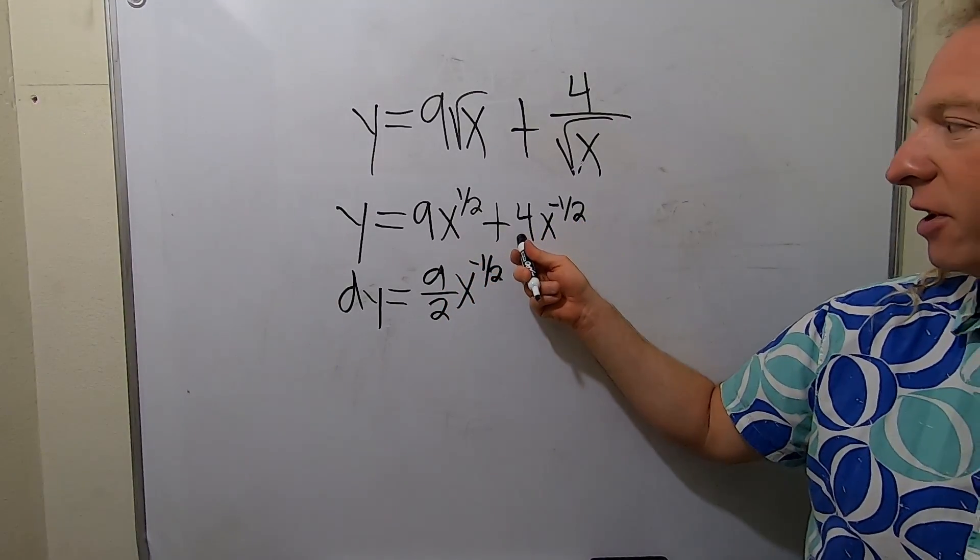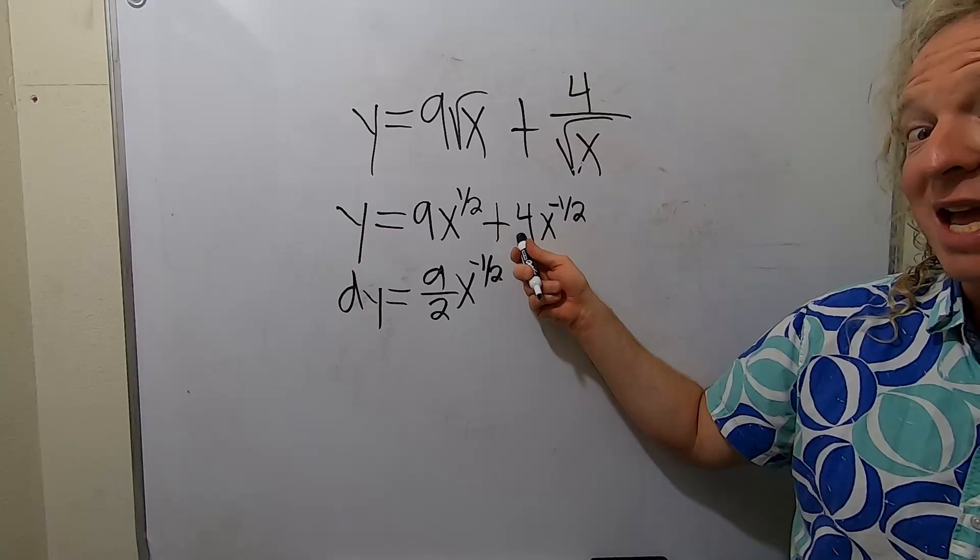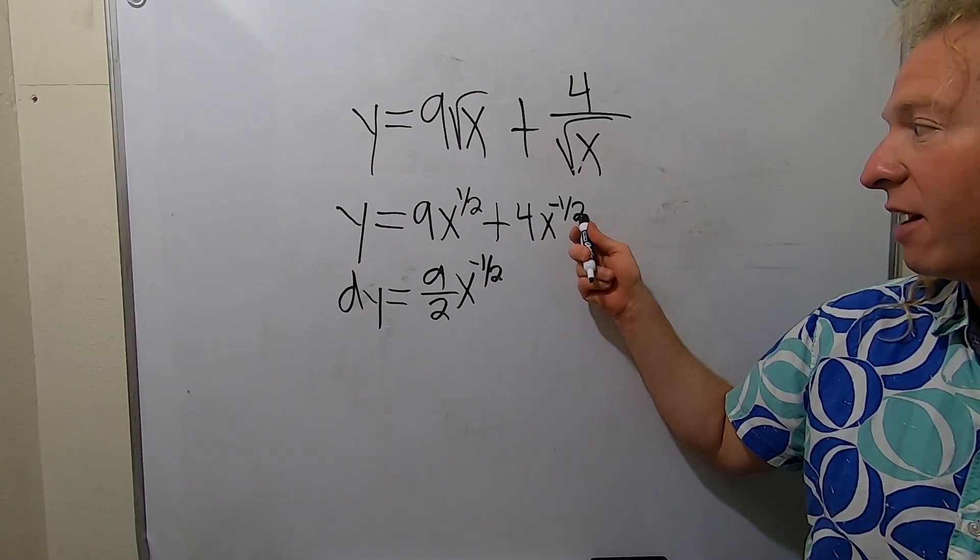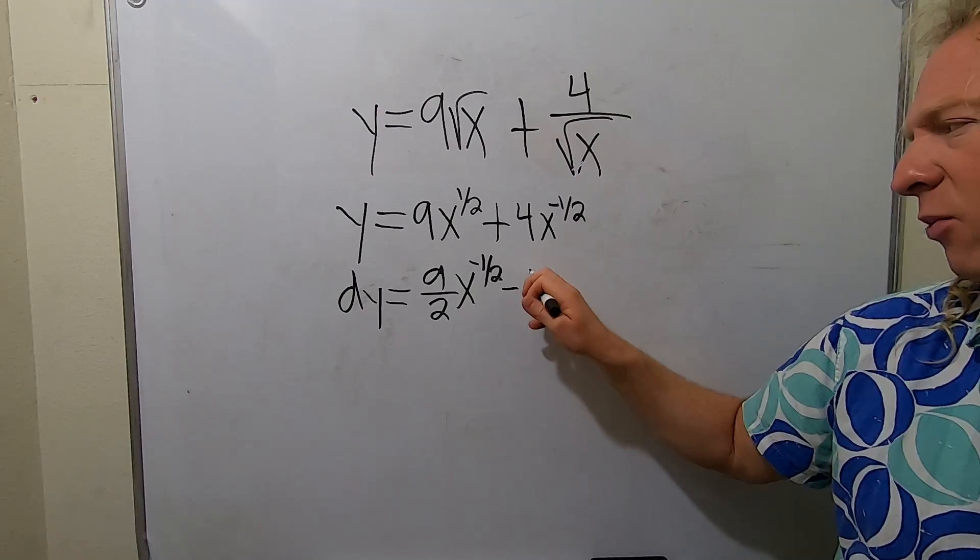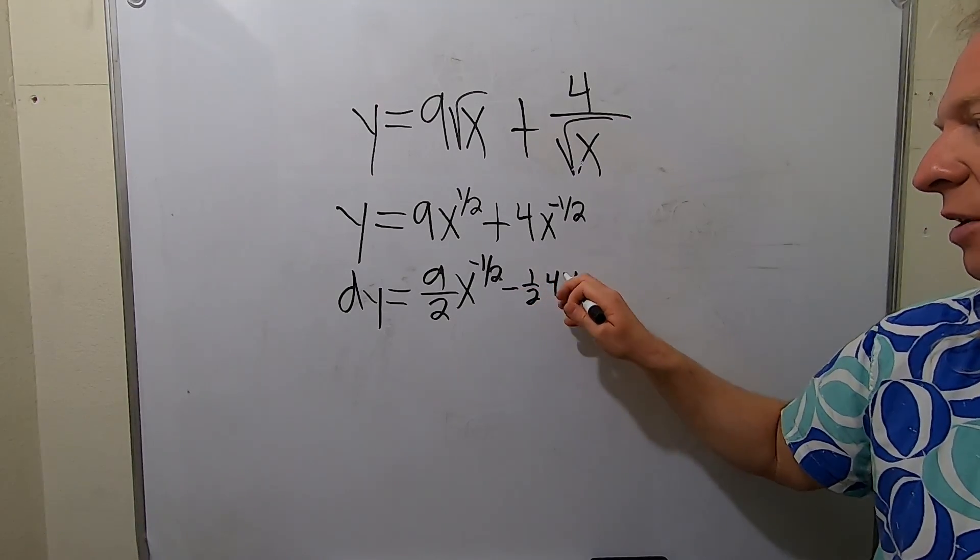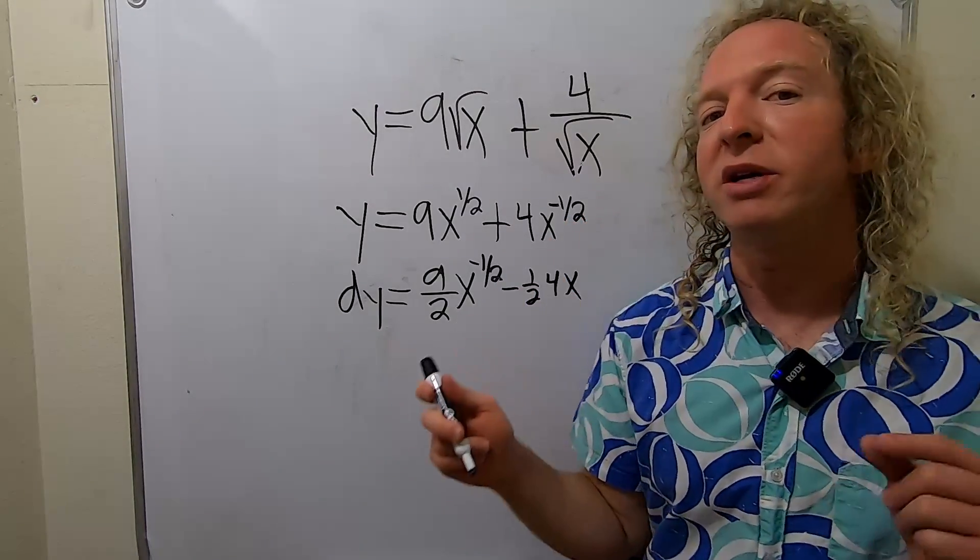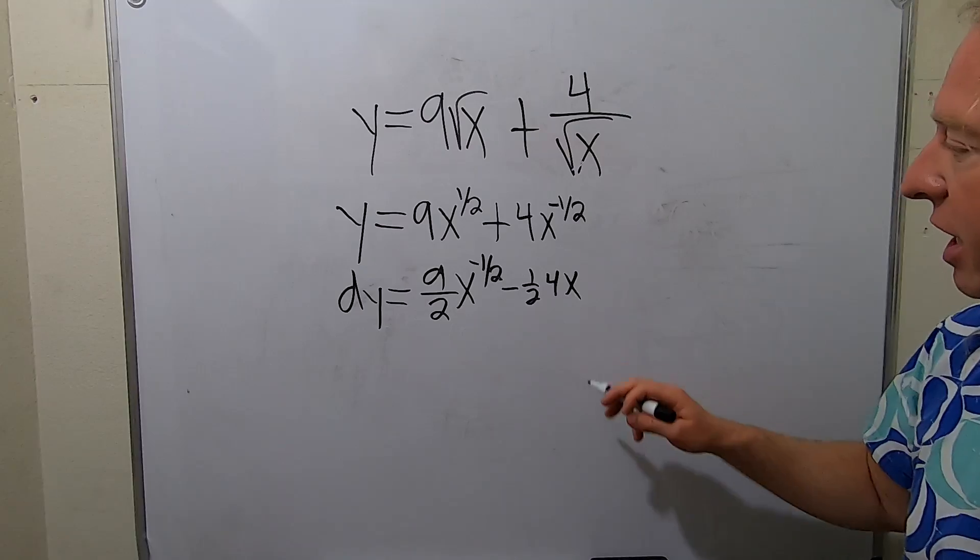Put this one in the front. But we get negative 2, right, because it's 1 half times 4. I don't want to mess up. Subtracting 1, negative 1 half minus 1, is negative 3 halves.